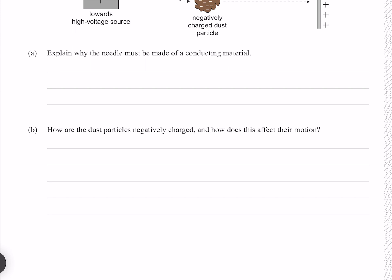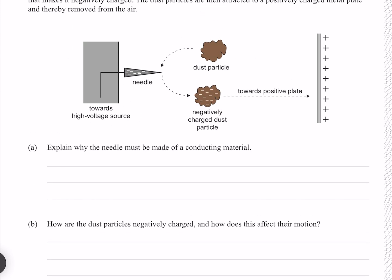Explain why the needle must be made of a conducting material. Our dust particles are coming in, and negative charges jump onto the dust particle. Since the dust particle is negatively charged, it's going to be repelled by our negative needle and attracted to our positive plate. Our needle must be made of a conducting material in order for the charges to flow from it — the needle must be conductive in order for the negative charges to flow through it.